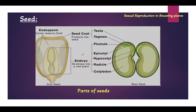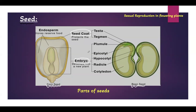Endosperm formation and embryo formation are complete, so now we'll talk about seeds. Seeds are majorly divided into two types: monocot seeds and dicot seeds. As shown in the picture, monocot seeds have one cotyledon whereas dicot seeds have two cotyledons. The structure of a seed includes a seed coat, which is a protective coat on the outside, and there is embryo and endosperm inside. Endosperm may be completely consumed or sometimes it remains as part of the seed.